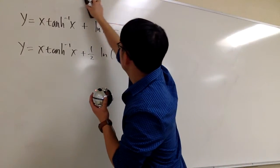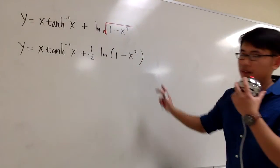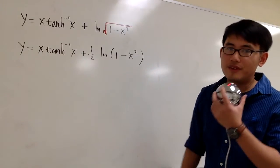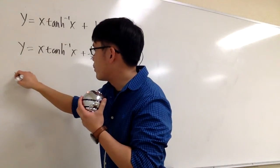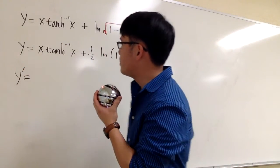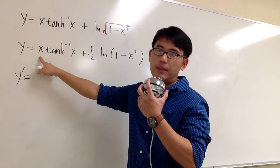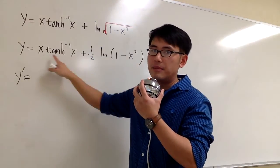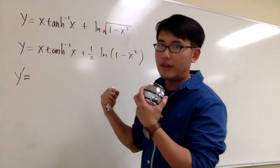So let me erase this. And now let's just kind of get ready to do the derivative for this. I will write down y prime. This will be, this is the product of two things, x times the inverse tangent. So we have to use the product rule.